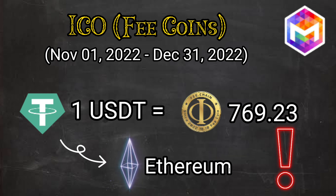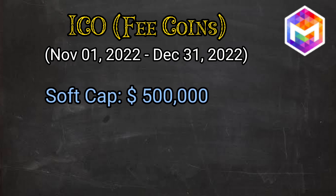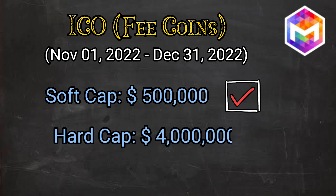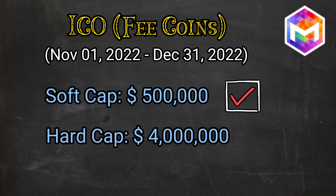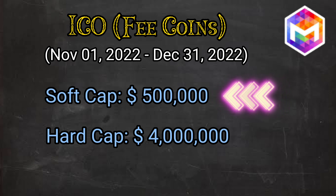You can participate in the ICO with a minimum of 100 USDTs. The address and tether used in this ICO is of the Ethereum blockchain. The soft cap of the ICO is set at $500,000, meaning the ICO will be considered successful if this amount is collected. The hard cap is set at $4,000,000 — if this amount is collected, it will be considered highly successful and the ICO will end on the same day rather than December 31, 2022. If the soft cap is not achieved, all transactions will be reversed to the senders and a new plan will be introduced.